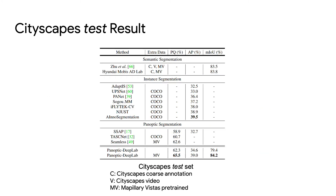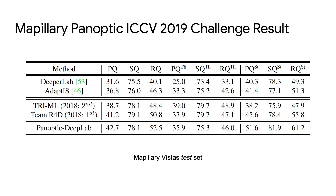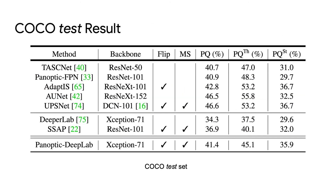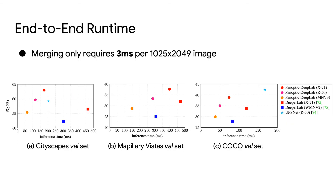We achieve state-of-the-art results on Cityscapes for three tasks without specific fine-tuning. Panoptic DeepLab won the Mapillary Panoptic Challenge at ICCV 2019. Panoptic DeepLab is the state-of-the-art bottom-up method on COCO and is comparable to popular top-down methods, achieving a better speed and accuracy trade-off.